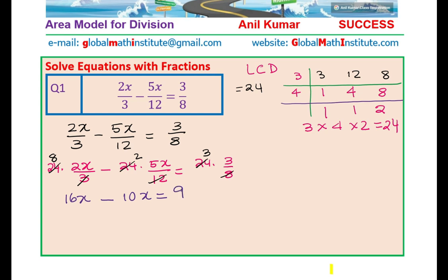So we get 16x minus 10x equals 9, which simplifies to 6x equals 9. Dividing by 6, we get x equals 9 over 6. Both can be further simplified by dividing by 3, giving us 3 over 2 as the answer. So our solution is x equals 3 over 2.